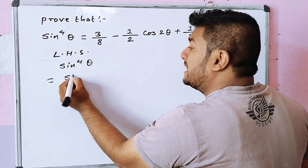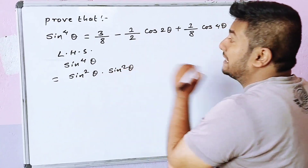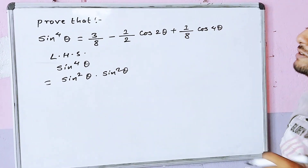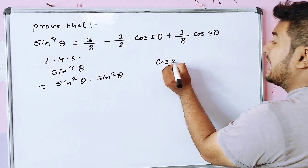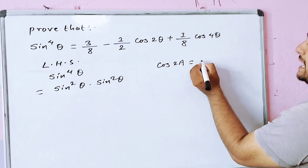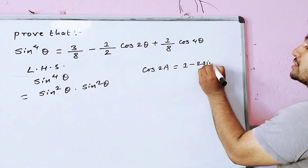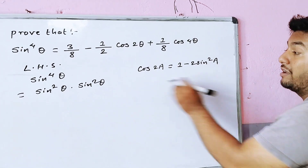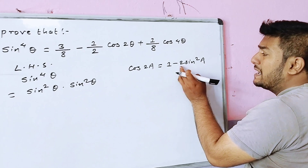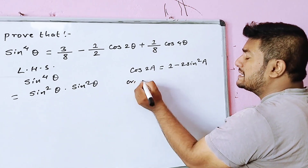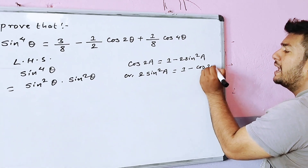Sin to the power of 4θ is equal to sin²θ into sin²θ. We know that sin²θ is equal to 1 minus cos 2θ divided by 2.